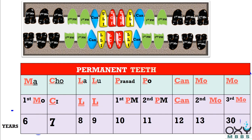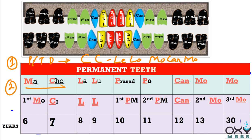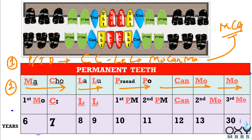So my dear medicos, you have to remember only two rhymes: first for primary or temporary dentition — 'CuL Mo Can Mo,' and for permanent dentition — 'Macho Lalu Prasad Pauken Mo Mo.' Whenever an MCQ comes related to eruption of teeth, first write these two rhymes, and your answer will be 100% correct.